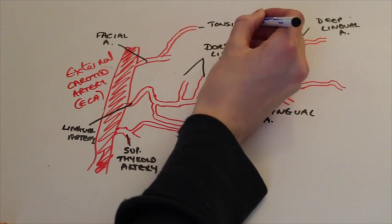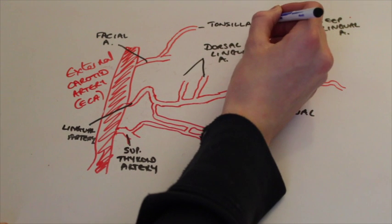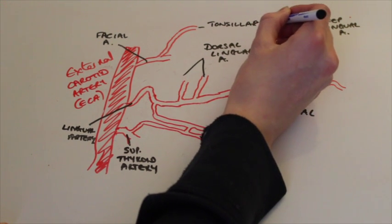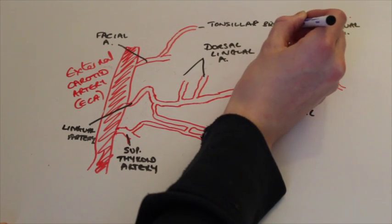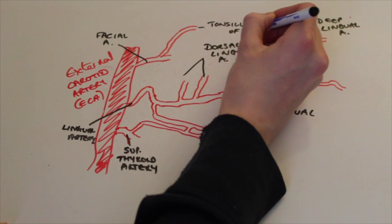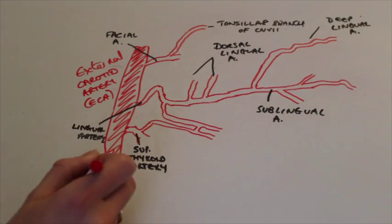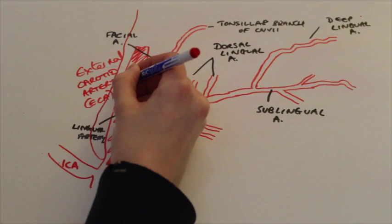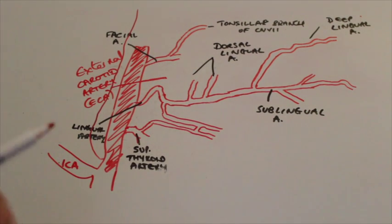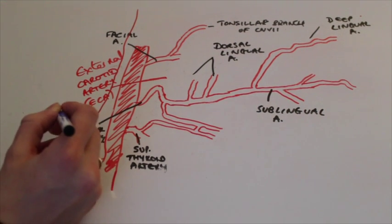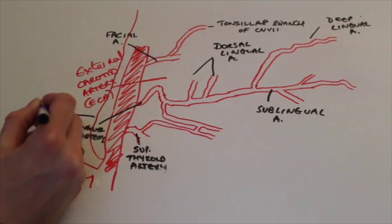Some literature will mention that there's a second smaller blood supply to the tongue. The tonsillar branch of the facial artery and also the ascending pharyngeal artery. However it is a much smaller supply than the lingual artery as they are mainly for supplying the tonsils in that region and also the pharynx.